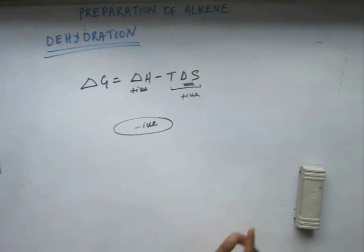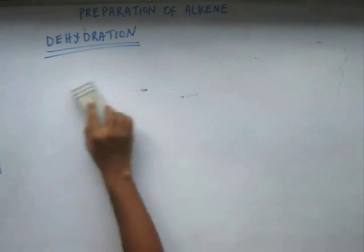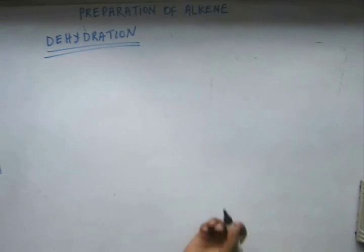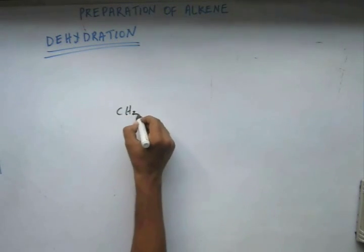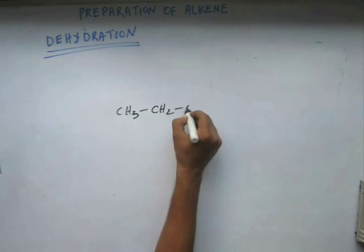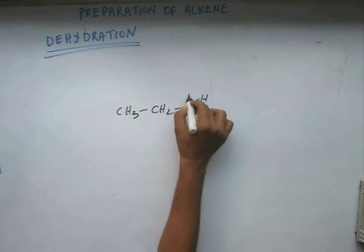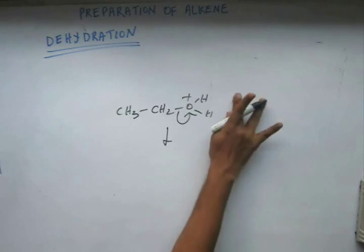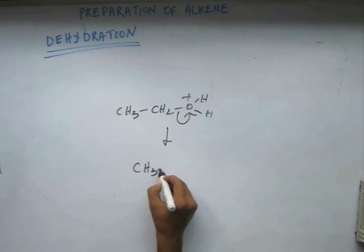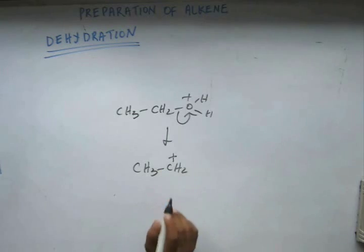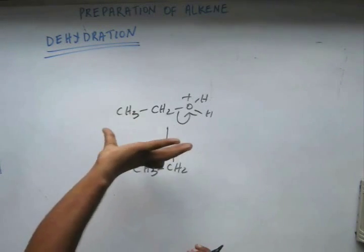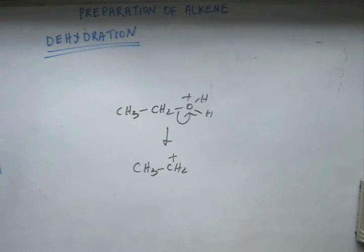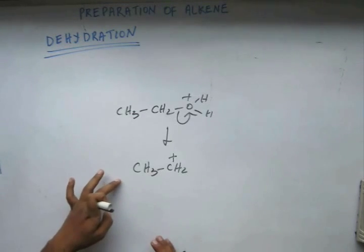And apart from this, as you can observe one more thing, this is an E1 mechanism because in the RDS, if you look, you have a water molecule and this water molecule is being removed off. That results in formation of a free carbocation. So in the RDS, you have only one molecule.